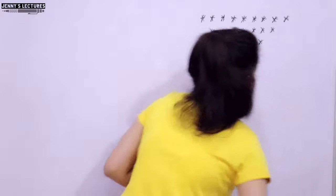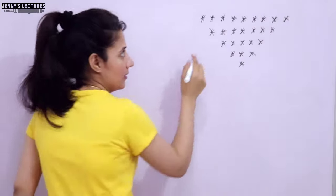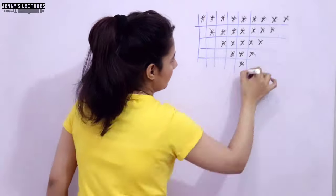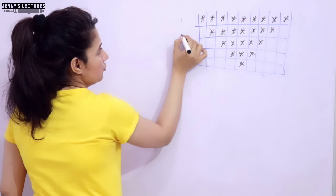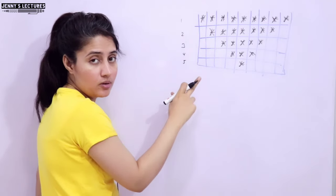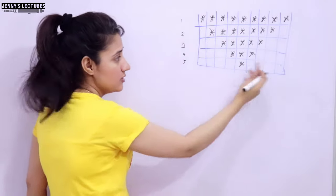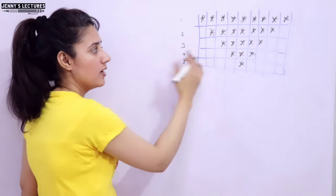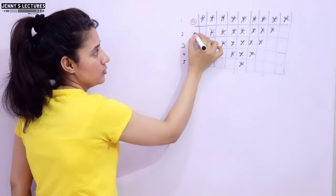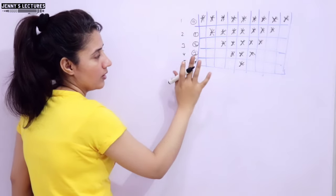Whenever you see a pattern, you have to analyze it and divide it into rows and columns. Here we have 5 rows. One loop will handle these rows. There is also a leading space before the star and a trailing space after the star. In the first row there is 0 space, in the second 1 space, in the third 2 spaces, in the fourth 3, and in the fifth 4 spaces before the star.